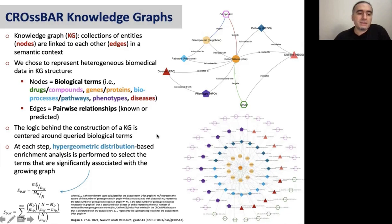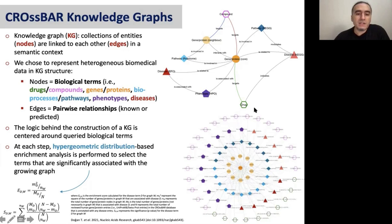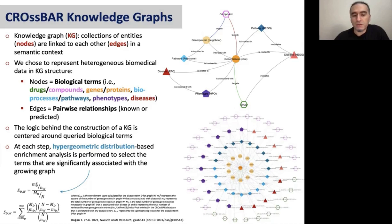The logic behind the construction of the knowledge graph is centered around the query biological term. These knowledge graphs are not pre-calculated — they are stored as independent collections in MongoDB. When the user comes to our web service and queries a term — it can be a gene, protein, phenotype, disease, function, compound, drug, or a combination of them — the knowledge graph is generated from scratch. At each step of this construction process, hypergeometric distribution-based enrichment analysis is performed to select the terms that are significantly associated with the terms in the growing graph. Without this procedure, the graph would get quite large quickly and it would not be possible to visualize anything from it.